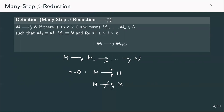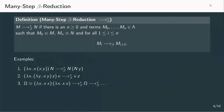Therefore, all of our examples from before are also examples for many-step reduction. We can even shorten the reduction sequence in the second example by writing that the term is many-step beta reducible to vz, instead of writing two one-step reductions.